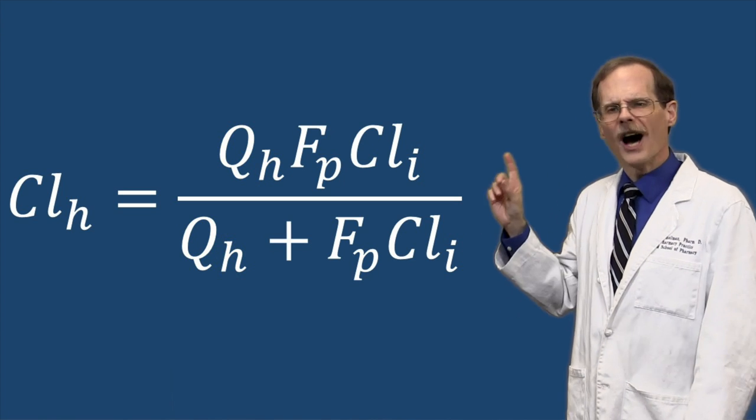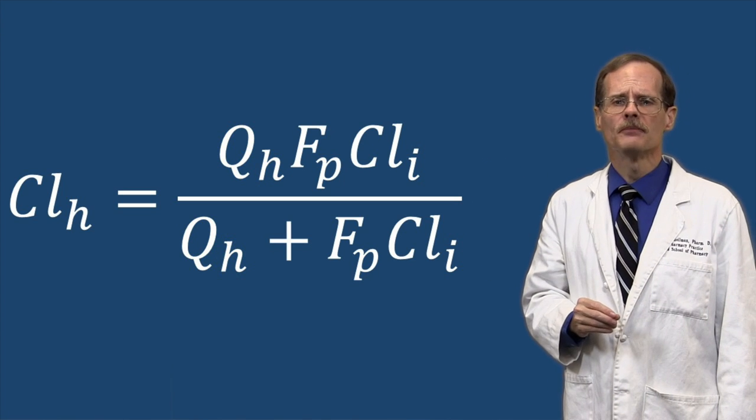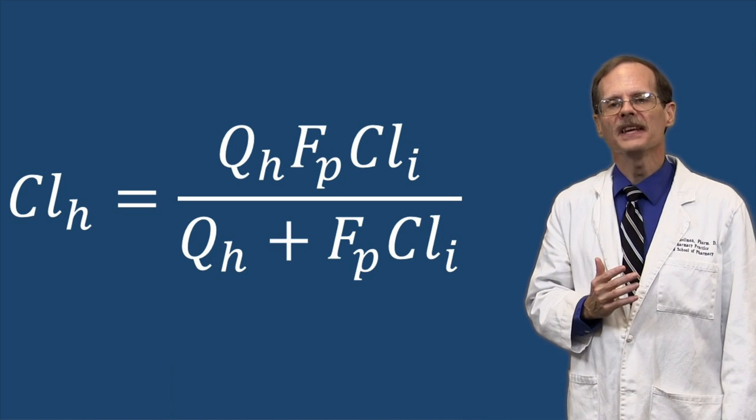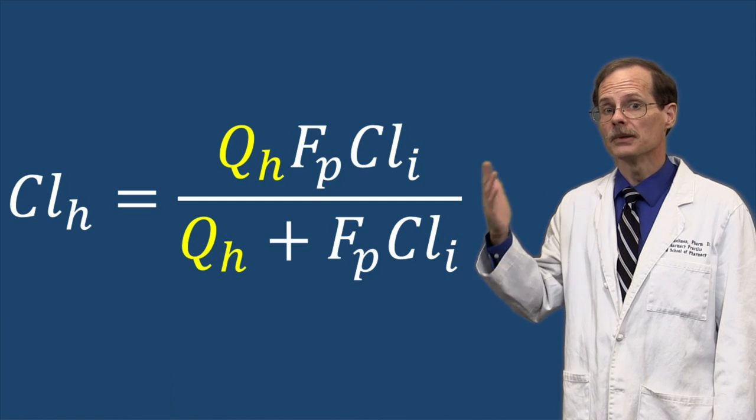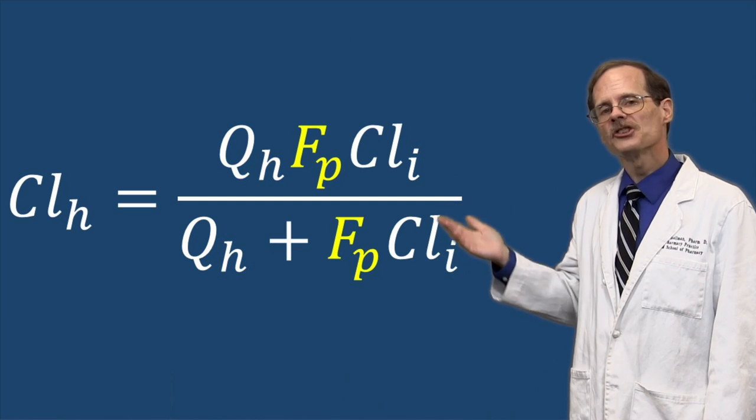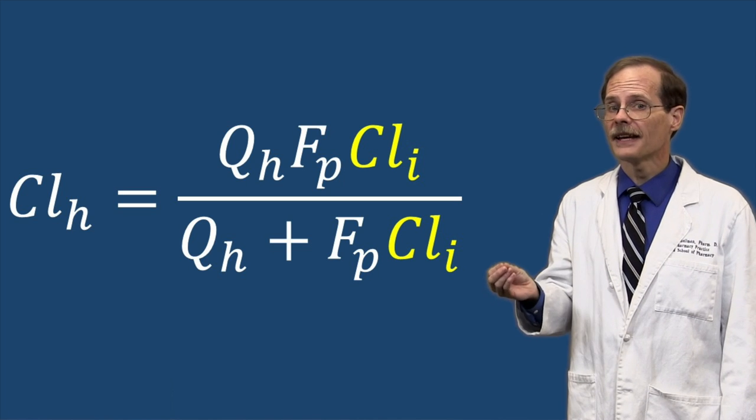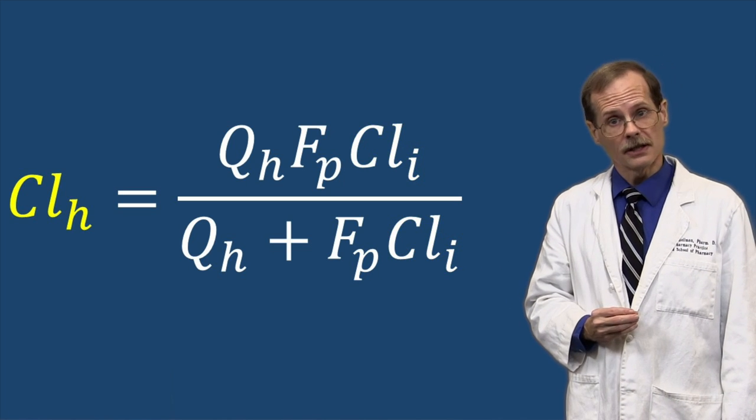So while the equation for the well-stirred model looks kind of intimidating, remember it's simply a way of thinking about how changes in hepatic blood flow, fraction of drug unbound, and intrinsic clearance might affect how quickly a drug is removed by the liver.